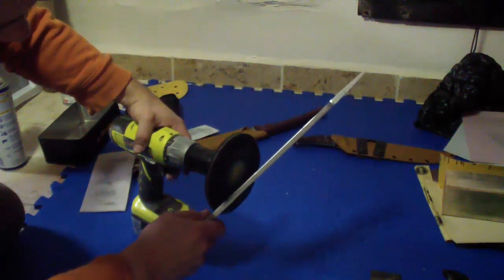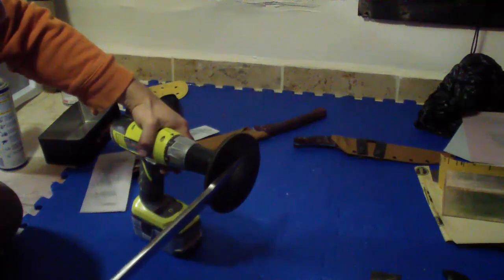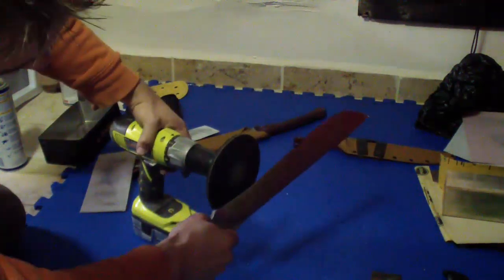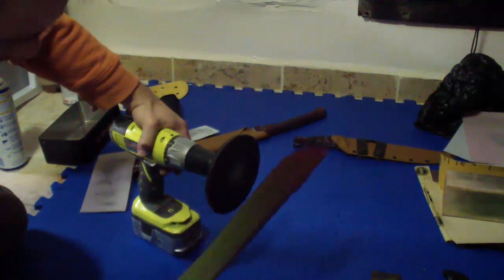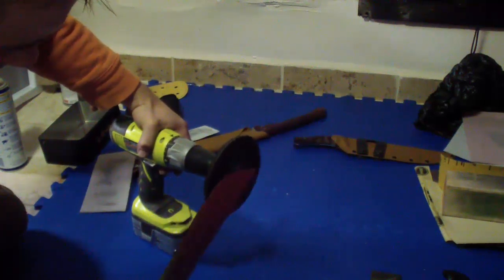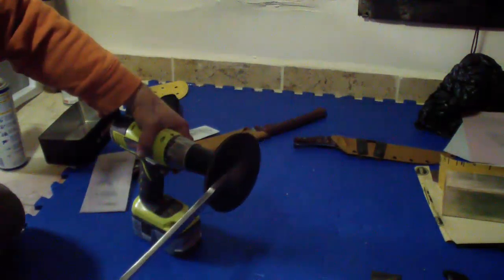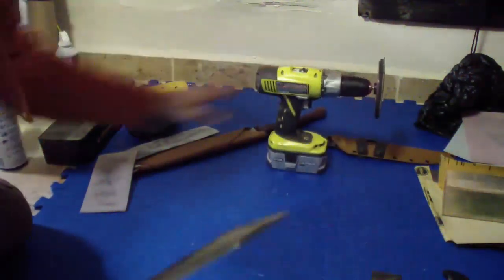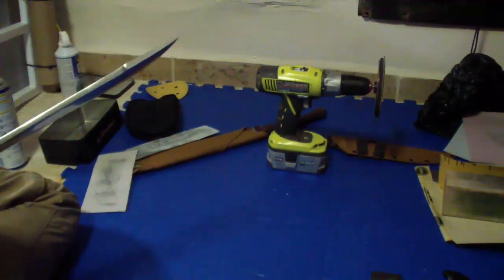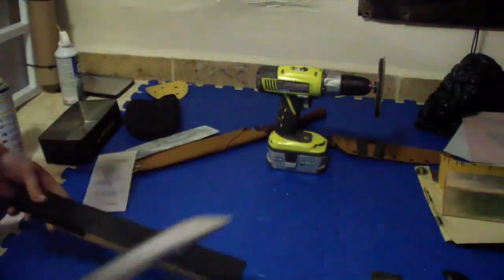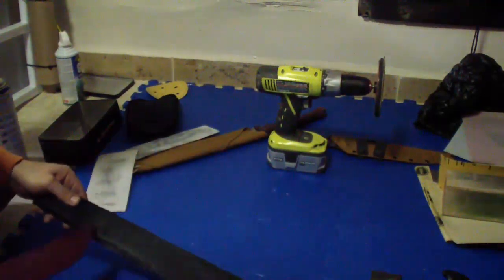This is my, I call it power strop, it's that sanding disc attachment for a drill, which I took one of the older sandpapers for it and I epoxied a piece of leather on it. It's removable, hook and loop system, and it just like a power strop, it strops the blade. You saw it, it took a couple seconds, and this is the sharpness of the blade right off the 400 grit belt and just those couple seconds on the power strop.